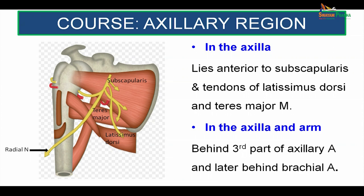Having formed in the axilla, this nerve lies anterior to the subscapularis and tendons of the teres major and latissimus dorsi, which are all the muscles forming the posterior wall of the axilla. At the same time, it is posterior to the third part of the axillary artery and to the first part of the brachial artery as it passes on into the arm.